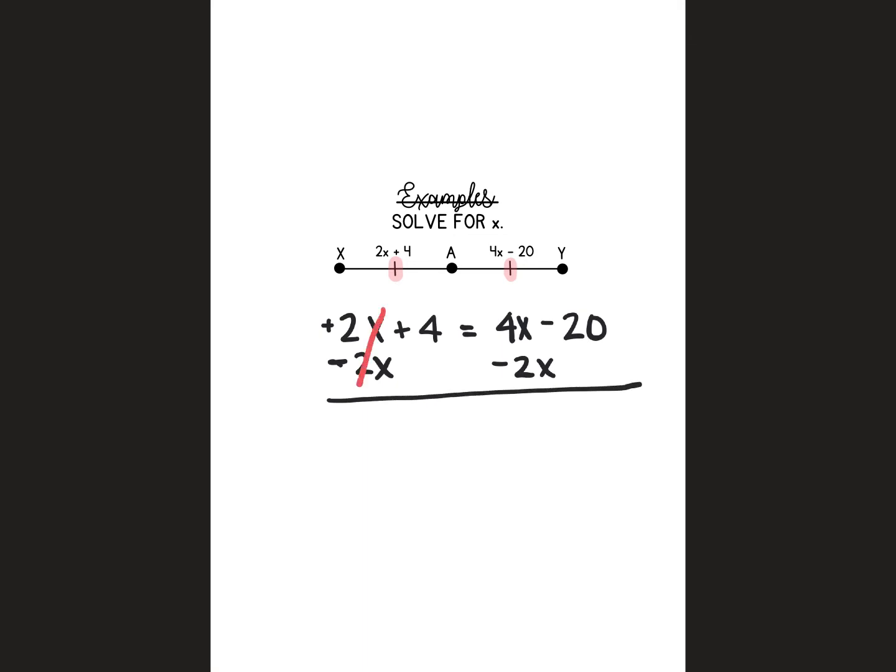That would cause these to cancel out. I would have this positive 4 left. 4 minus 2 is going to leave me with 2x. And then I'm going to carry down my negative 20. I'm going to add 20 to both sides. 4 plus 20 is 24. Carry down the 2x. These have cancelled out. Divide both sides by 2. And x equals 12. I was solving for x, so I'm done.